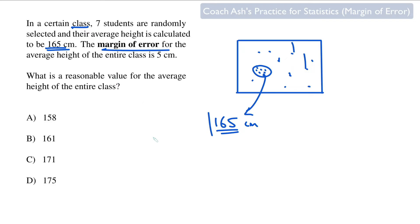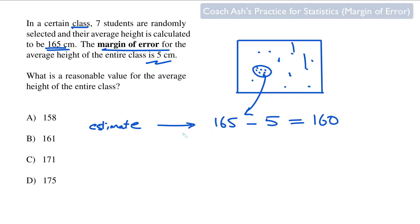Using some advanced math, suppose we find out that the margin of error is five. You take this 165 number, which is your estimate, and you subtract the margin of error from it — so minus five — giving you 160 as the lower bound. Similarly, you take 165 and add the margin of error of five to get 170.